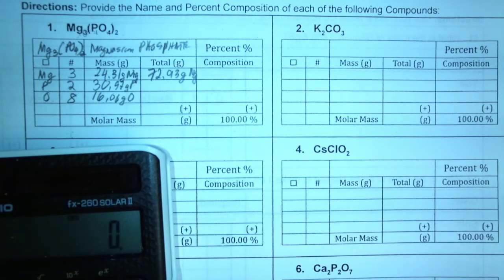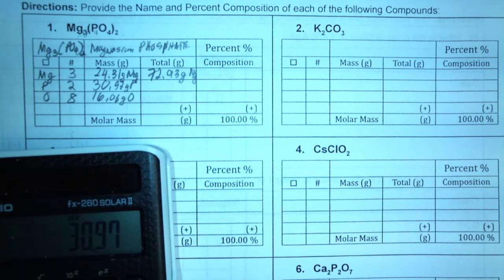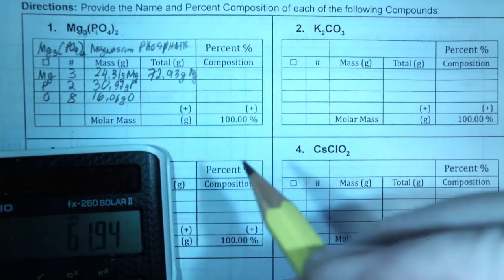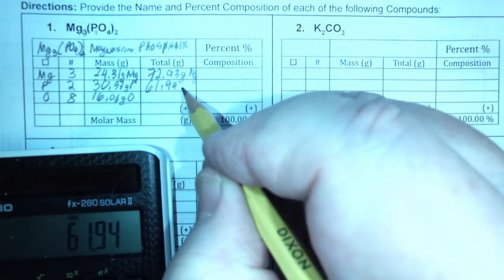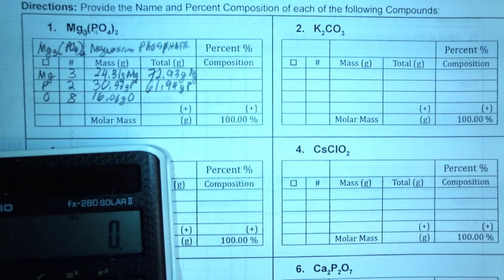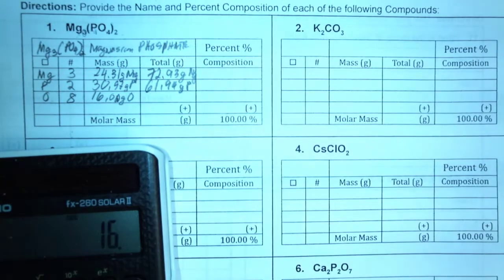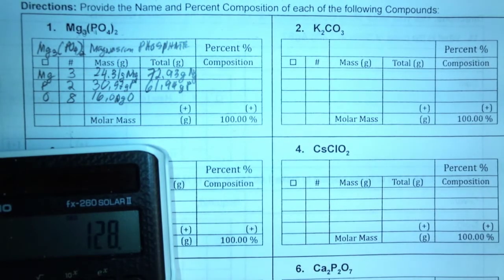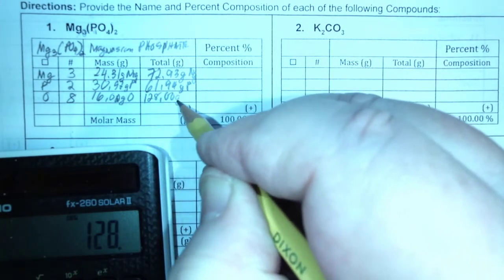Okay. 30.97 times two. 61. And again, I want to encourage everybody to do these things twice. It's actually good for you to do everything first. 16 times eight equals 128.00 grams of oxygen.